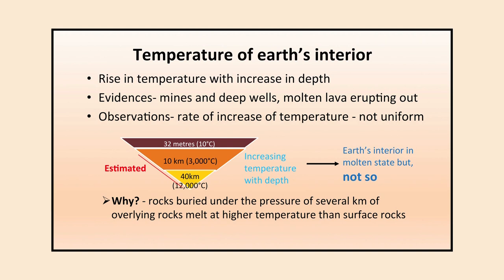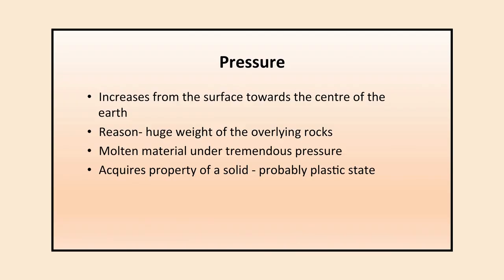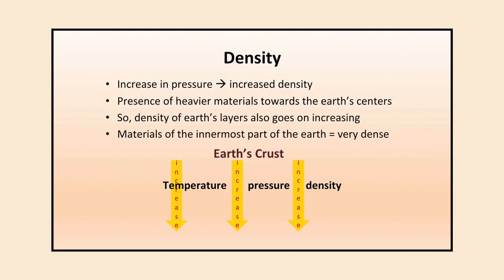Further down it can be 12,000 degrees Centigrade or more — but this is only estimated. In reality, the Earth is not in a completely molten state. This is because rocks buried under the pressure of several kilometers of overlying rock melt at higher temperatures than surface rocks. Due to this overlying pressure, the rocks do not melt easily, so the inside of the Earth is not entirely molten.